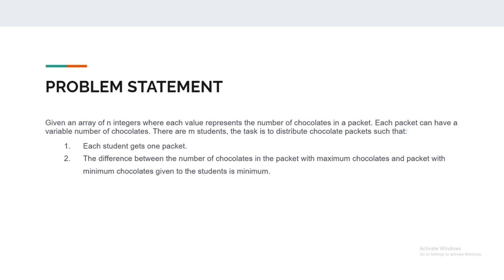Each packet can have a variable number of chocolates. There are m students. The task is to distribute chocolate packets such that each student gets one packet, and the difference between the number of chocolates in the packet with maximum chocolates and the packet with minimum chocolates given to the students is minimum.